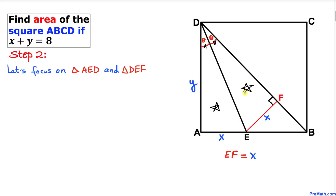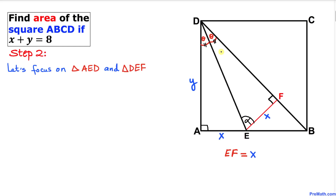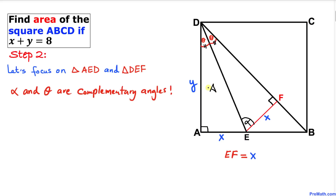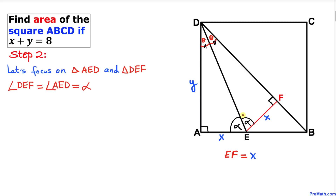Since ABCD is a square, angle A is 90 degrees. The sum of angles in any triangle is 180 degrees. If one angle is theta and another is alpha, then alpha and theta are complementary angles — meaning they add up to 90 degrees. In triangle DEF, the corresponding angle also turns out to be alpha, so the two angles are congruent.